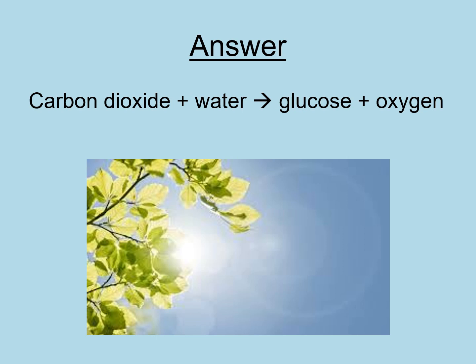Here is your answer. The reactants that plants use are carbon dioxide from the atmosphere, which goes into their leaves through tiny holes on the bottom called stomata, and water, which goes into the plant up through the roots. A chemical reaction happens — that chemical reaction is photosynthesis. Sunlight is the form of energy needed for this reaction to happen. The products are glucose, which is what the plant needs as food energy, and oxygen, which leaves the plant through the holes on the undersides of the leaf.